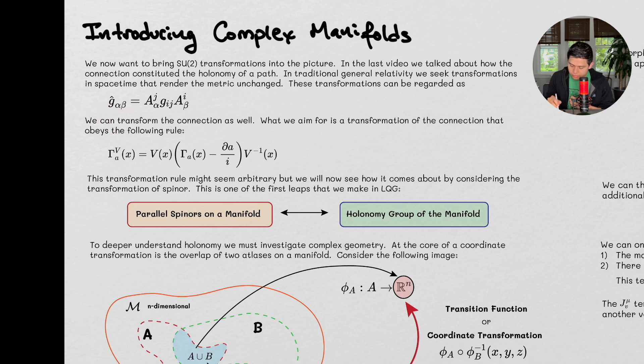Where we have G alpha beta, this is the metric located at every point in space-time, so it's a field.